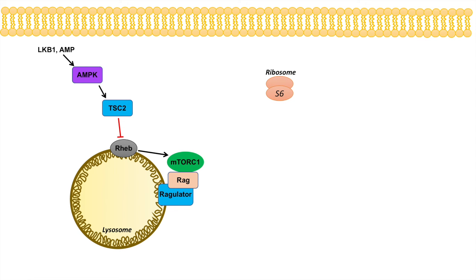The next major regulator of TSC2 is AKT. AKT is traditionally known to be activated by growth factors such as insulin. When AKT inhibits TSC2, that actually leads to the activation of mTORC1. So the key takeaway: AMPK inhibits mTOR, while AKT activates mTOR.